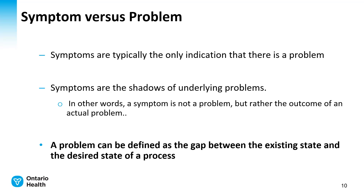Let's talk about the difference between a symptom and a problem. A symptom is what tells us there is a problem, and there may be multiple symptoms of a problem. What we want to define — to ensure we are looking at fundamental change at a system level — is the actual problem. The problem is the gap between what is happening and what we want to have happen. For example, I noticed I was getting behind on my work, and initially I thought that was the problem, but getting behind is actually a symptom of the problem, which is: I'm not getting to work on time.